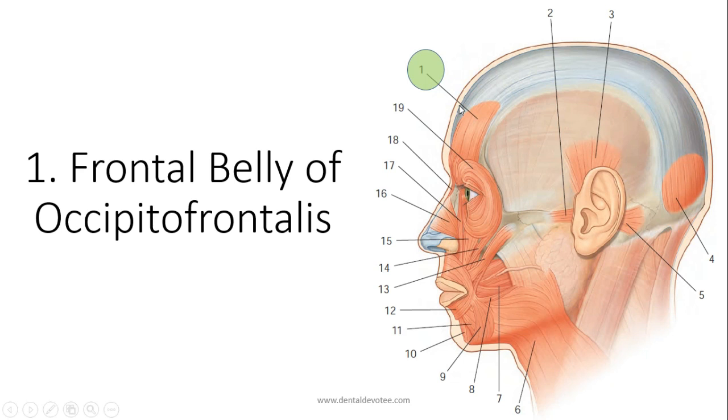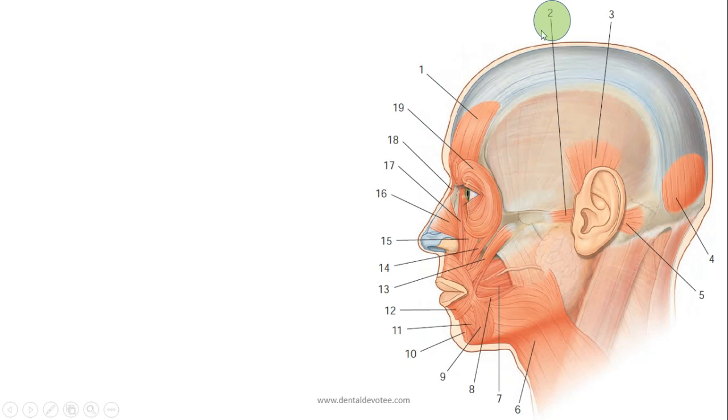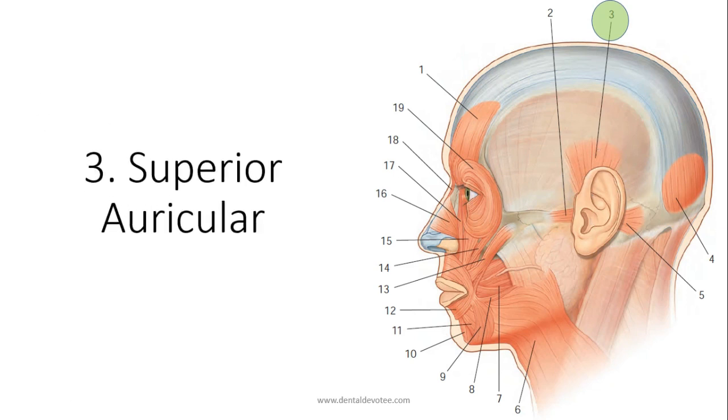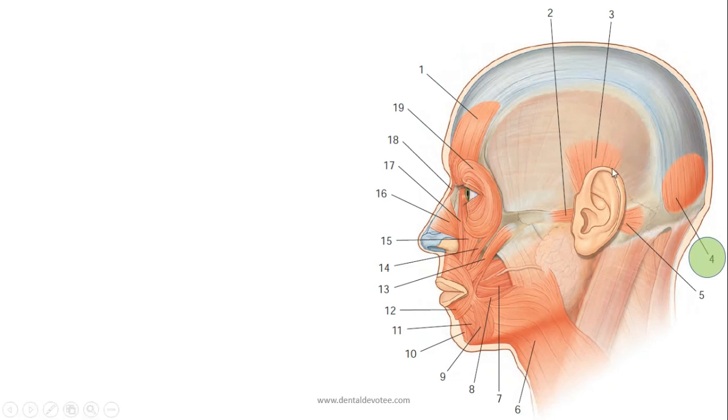Another muscle highlighted is number two. It is present just before the auricle, auricle means ear, so this muscle's name is anterior auricular muscle. Similarly, this is above the auricle so the name of this muscle is superior auricular.